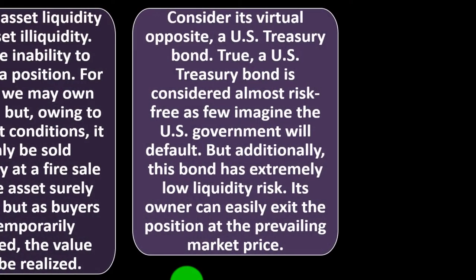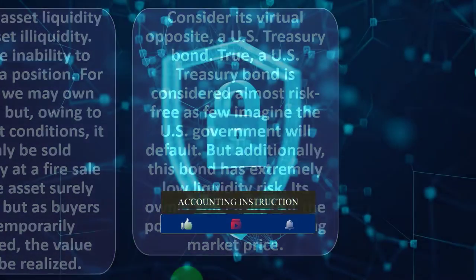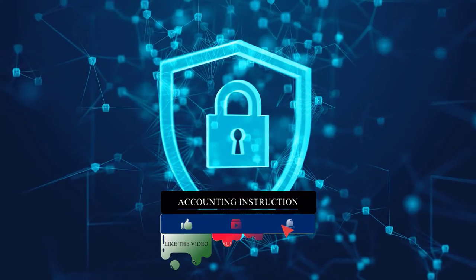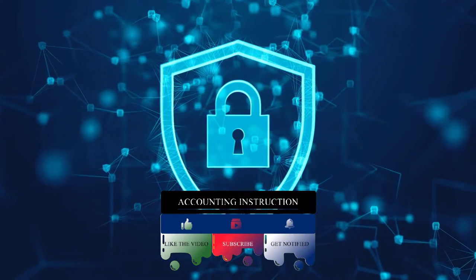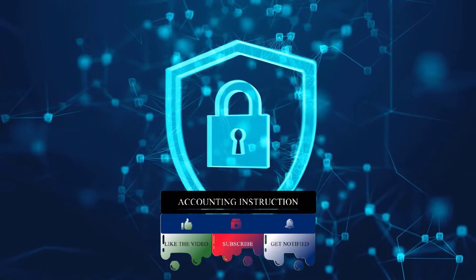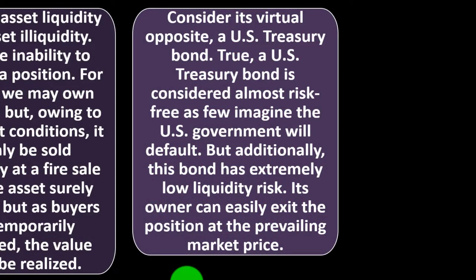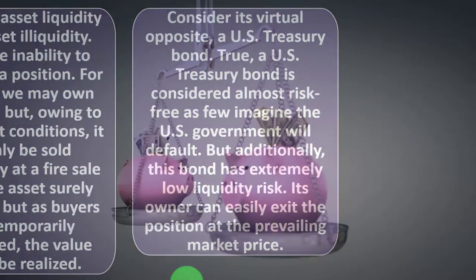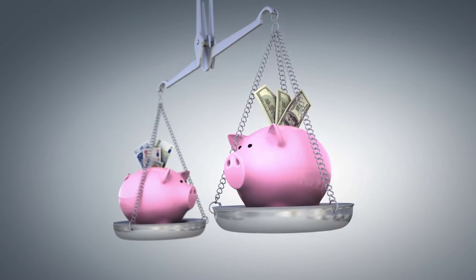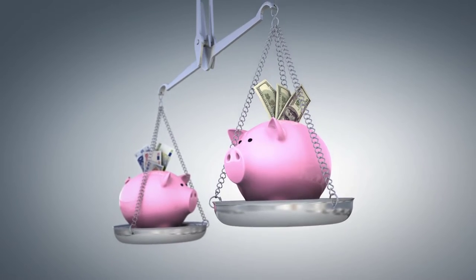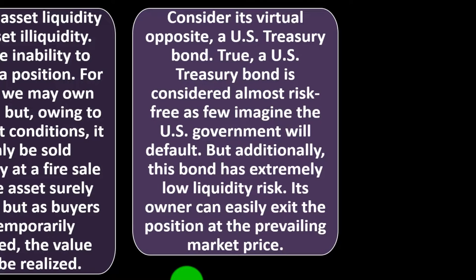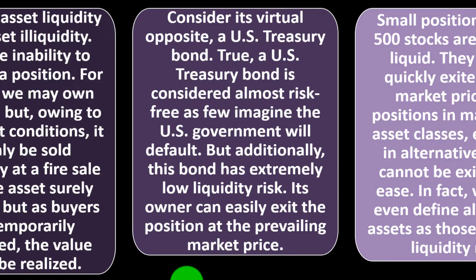Consider the virtual opposite: a U.S. Treasury bond. A U.S. Treasury bond is generally a safe place to park money — you get some return and it's a more stable area, backed by the U.S. government. A U.S. Treasury bond is considered almost risk-free, as few imagine the U.S. government will default. Additionally, this bond has extremely low liquidity risk — its owner can easily exit the position at the prevailing market price, with little price fluctuation, making it much easier to exit than, say, real estate.